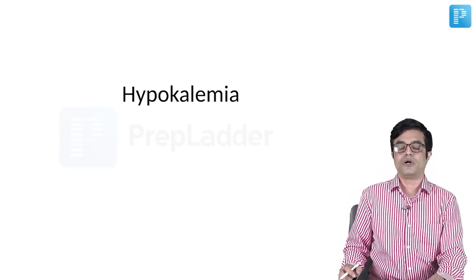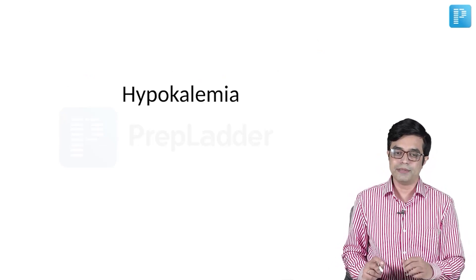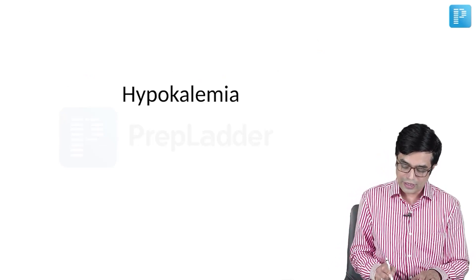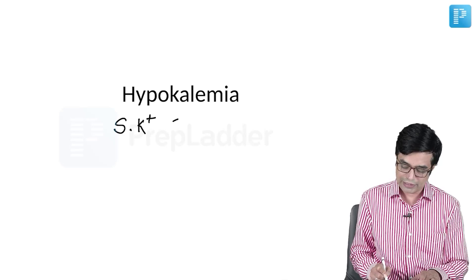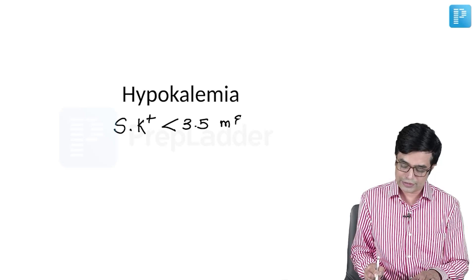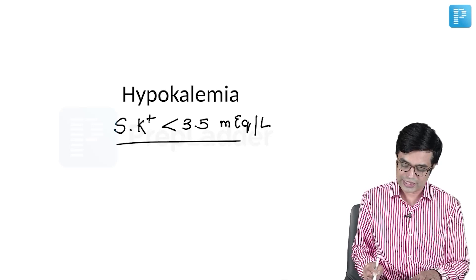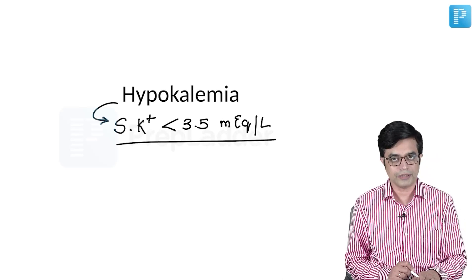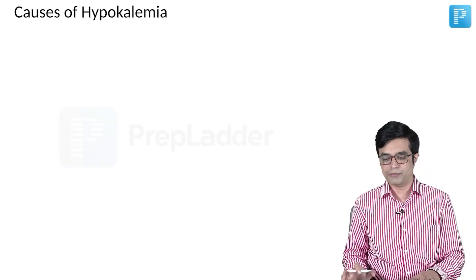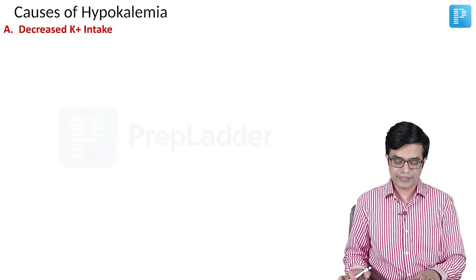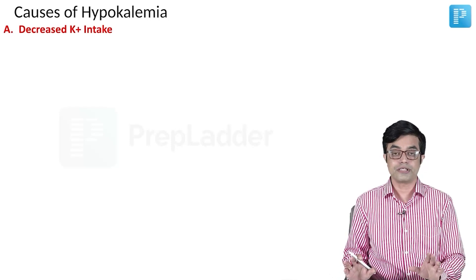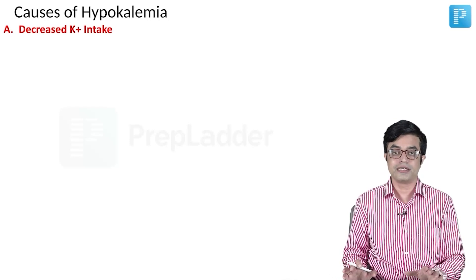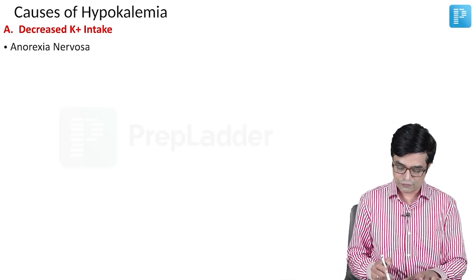We now move to the opposite end of the spectrum — hypokalemia. Hypokalemia is defined as serum potassium level less than 3.5 milliequivalents per litre. The causes of hypokalemia: first is decreased potassium intake, classically seen in anorexia nervosa — a question on this has been asked in exams.